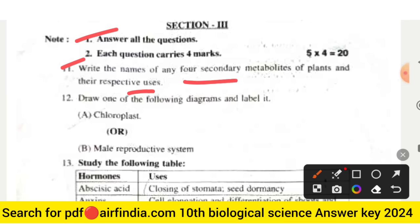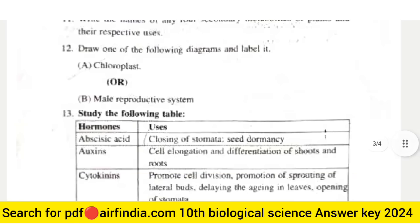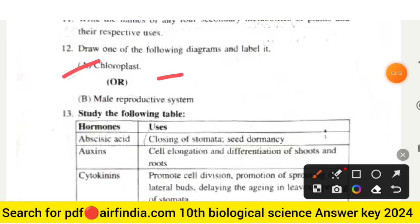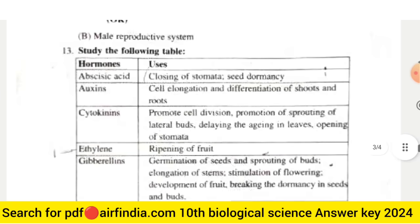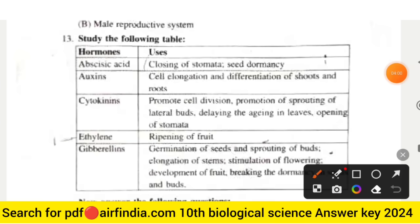Question number twelve: draw one of the following diagrams and label it. Option A is chloroplast, and option B is the male reproductive system. Question number thirteen: study the following table of plant hormones — abscisic acid and its uses include closing of stomata and seed dormancy.